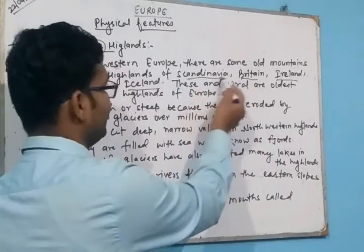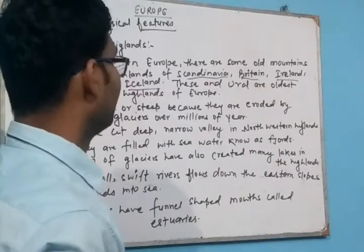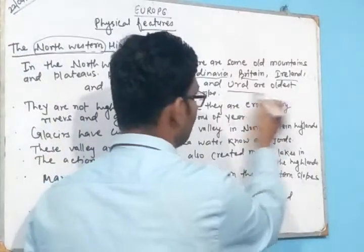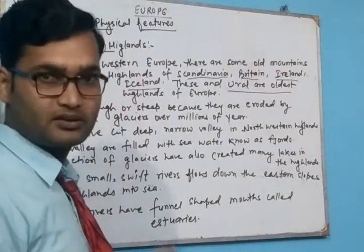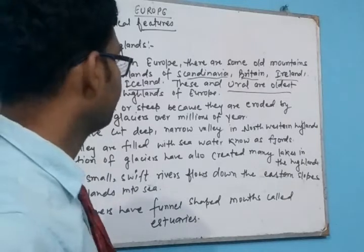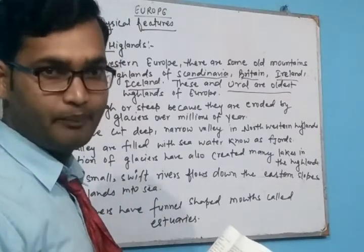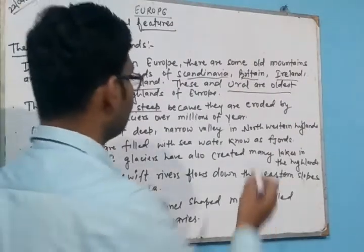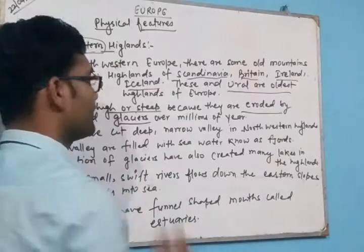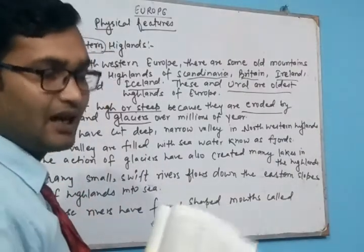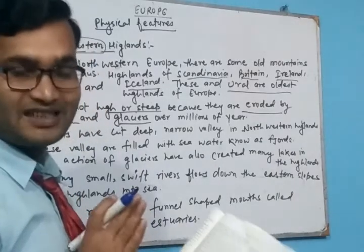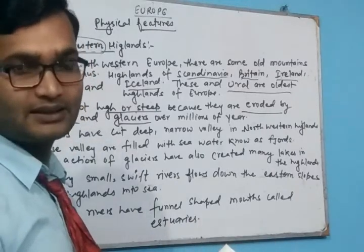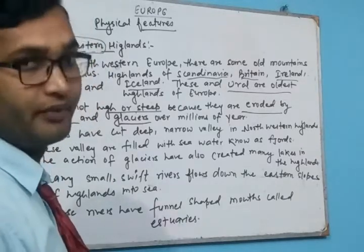In north-western Europe there are old mountains and plateaus in Scandinavia, Britain, Iceland, Ireland, and the Ural Mountains. The Ural Mountains separate Europe from Asia. These are all very old mountains with no pits and no sharp peaks. They are not high or steep because they have been eroded by rivers and glaciers over millions of years.